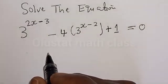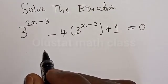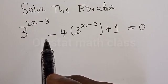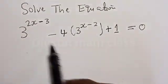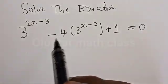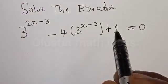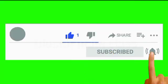Hi everyone, welcome to my class, the Olusta class, where we teach mathematics and statistics. In today's class, we want to find the value of x from this given exponential equation: 3 raised to the power (2x minus 3) minus 4 times 3 raised to the power (x minus 2) plus 1 is equal to 0. But before we proceed, please don't forget to like, share, comment, and subscribe.